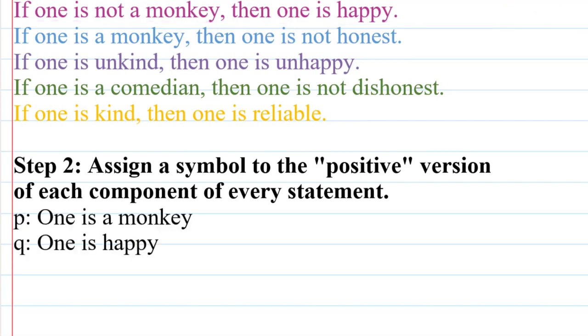So I'm going to let P be one is a monkey and Q one is happy, and then I'm going to look at the next statement. In the next statement, we have one is a monkey, which we already have a symbol for, and then one is not honest. So I'm going to make a letter, a symbol, to represent one is honest, and that symbol will be R.